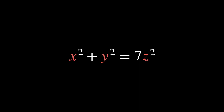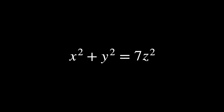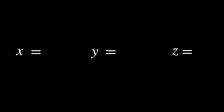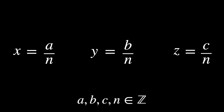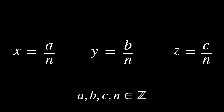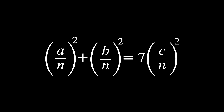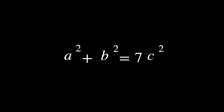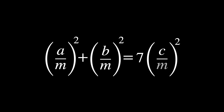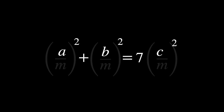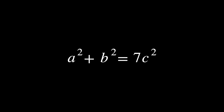Suppose x, y and z are rational numbers that satisfy the equation — will we get a contradiction? If n is the least common denominator of x, y and z, we can write x equals a over n, y equals b over n, and z equals c over n, such that a, b, c and n are integers. By multiplying n squared, it becomes a squared plus b squared equals 7c squared. If these have a common factor m, we can replace them by a over m, b over m, and c over m, and the equation still holds. We may therefore suppose that a, b, and c are integers with no common factor.